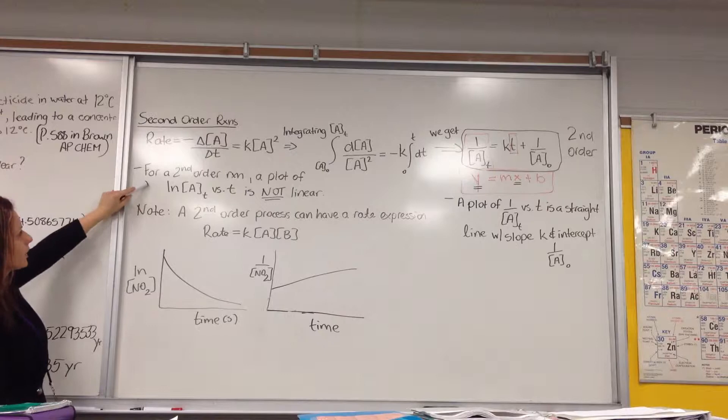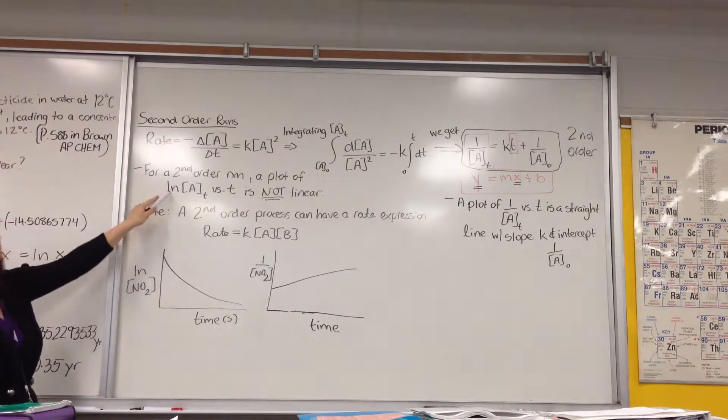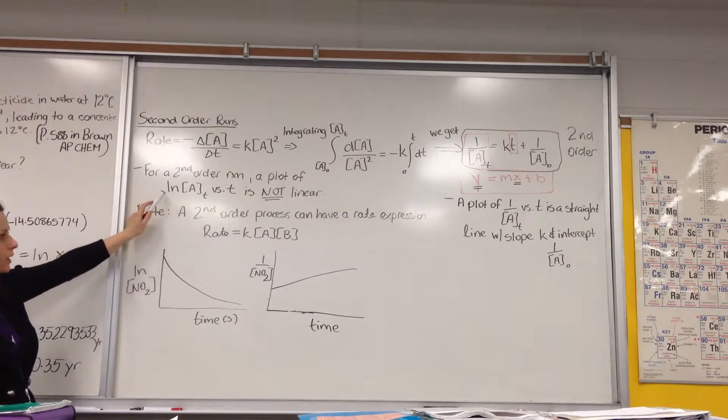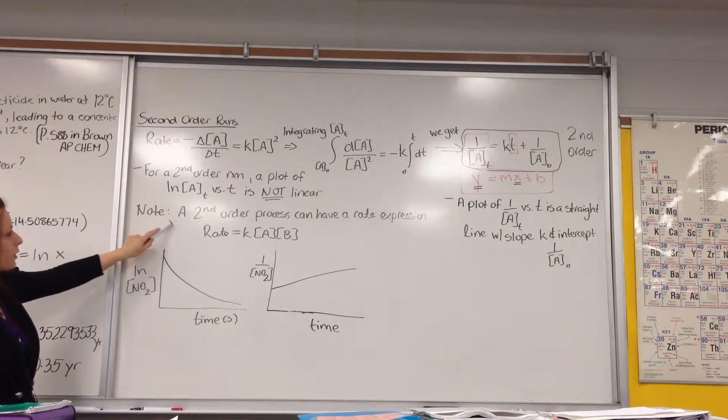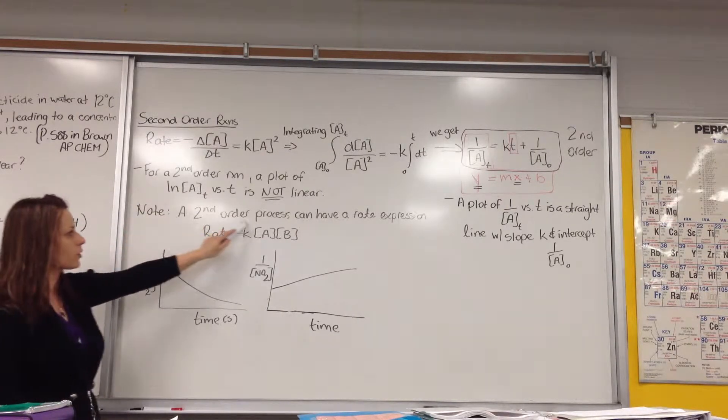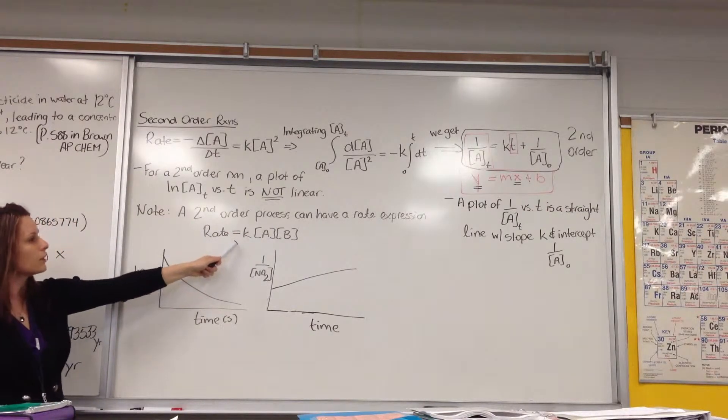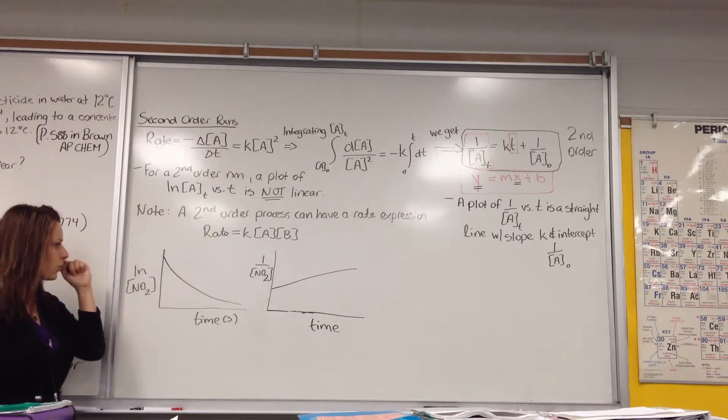So one thing to note here is that for a second-order reaction, a plot of A at T versus T would not give us a straight line. It would not be linear. Also, another thing to note is that a second-order process can have other forms of expression, but in terms of ease and simplicity of math, we kept it as A-squared.